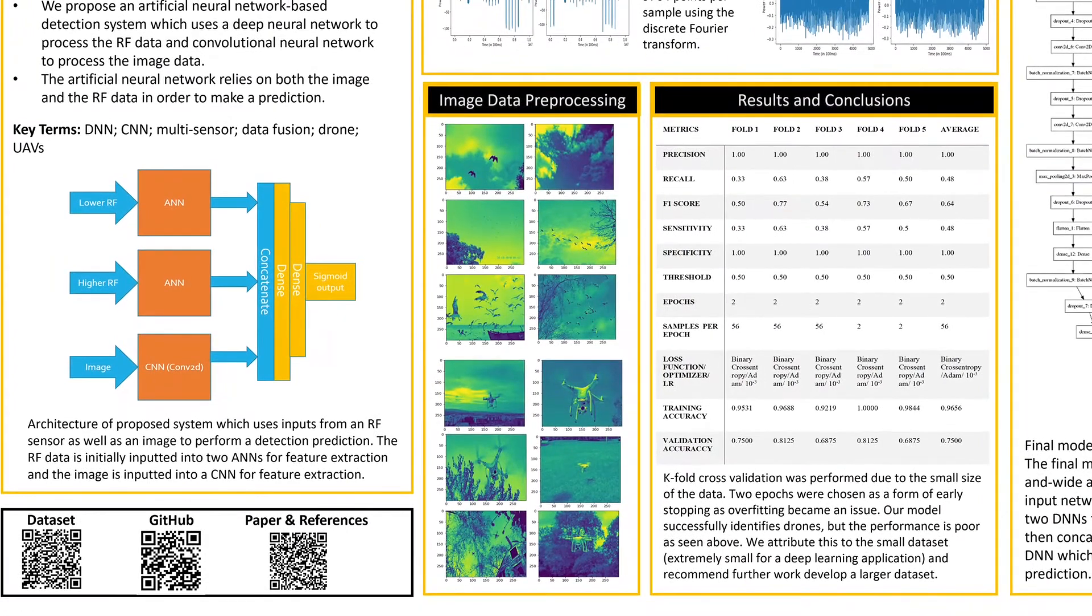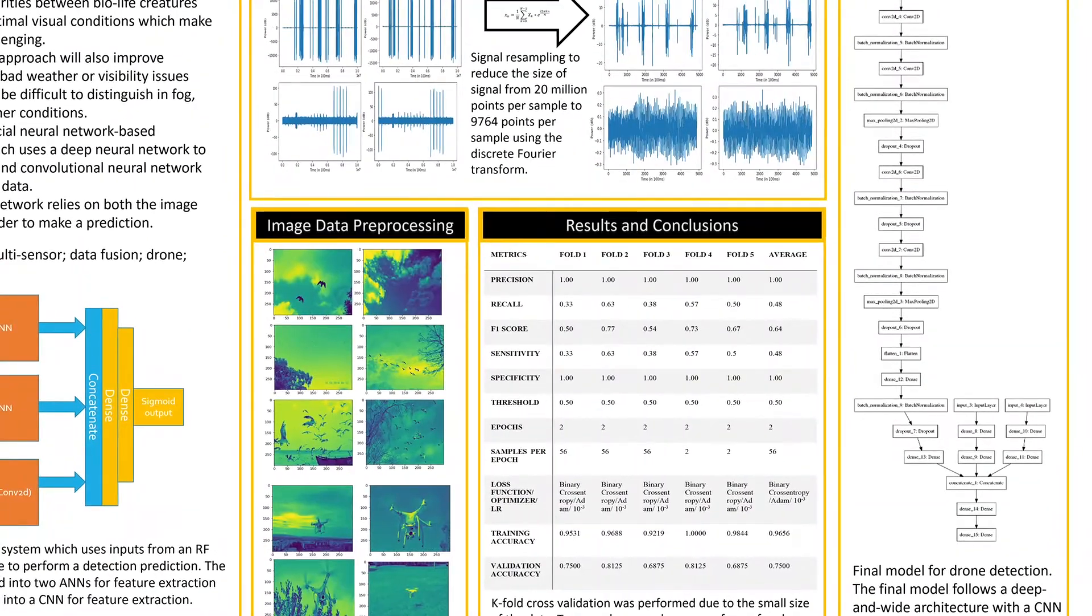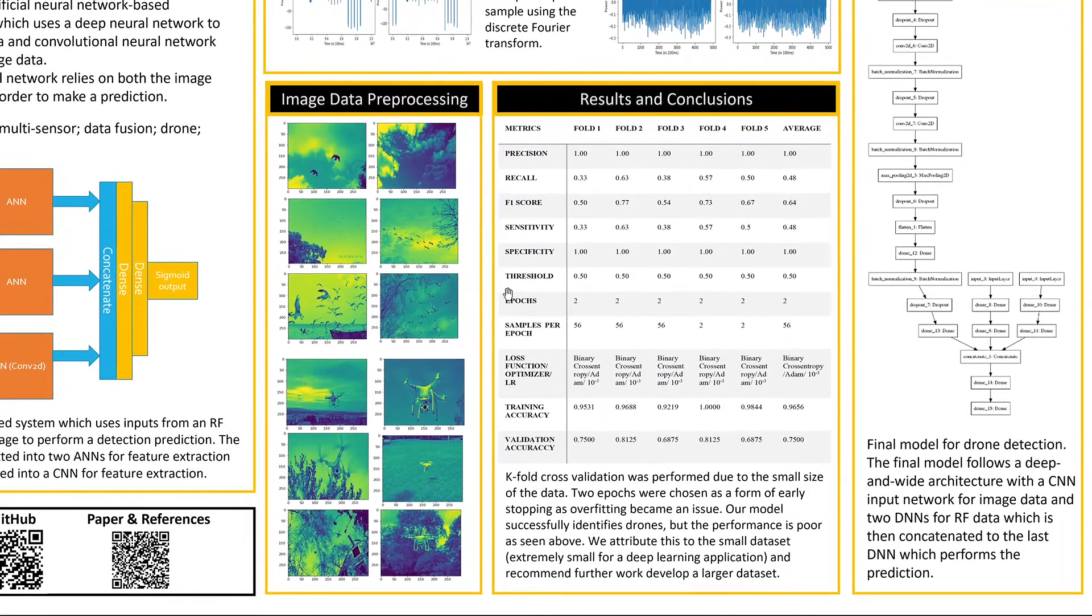Once we have both of those processed, we're able to use both data and combine them in order to make a prediction result. As you can see, our dataset contains possible false positives like birds, which are often pitfalls of the single sensor based systems.